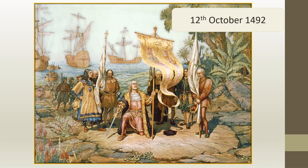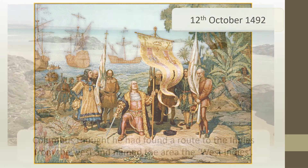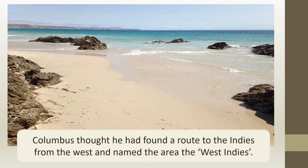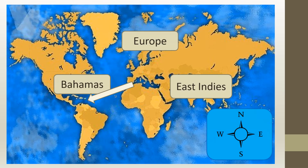On the 12th of October 1492, Christopher Columbus and his men set foot on the land they thought was the Indies. Columbus thought he had found a route to the Indies from the west and named the area the West Indies. However, Columbus had actually travelled to a group of islands known as the Bahamas.